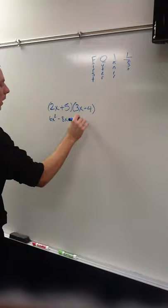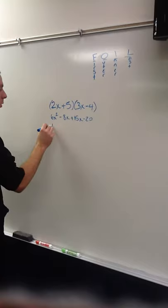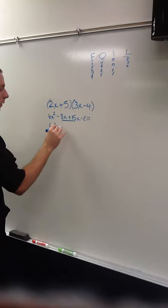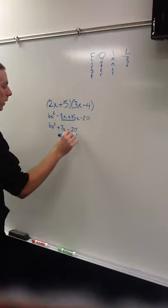And now you've got to combine the like terms. So, you have 6x squared, and then right here, you have negative 8x and 15x. So, that'd be plus 7x, and then minus 20. So, that's the first problem.